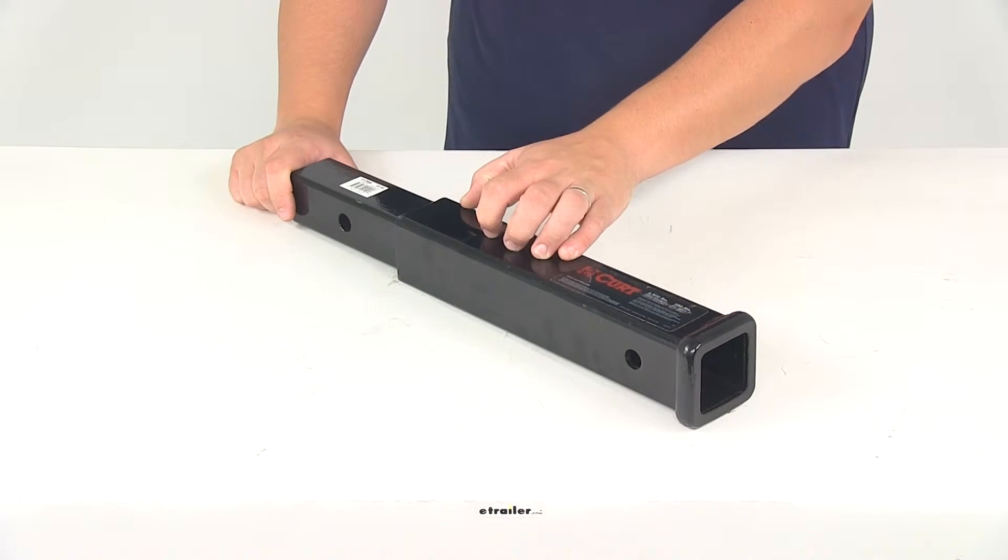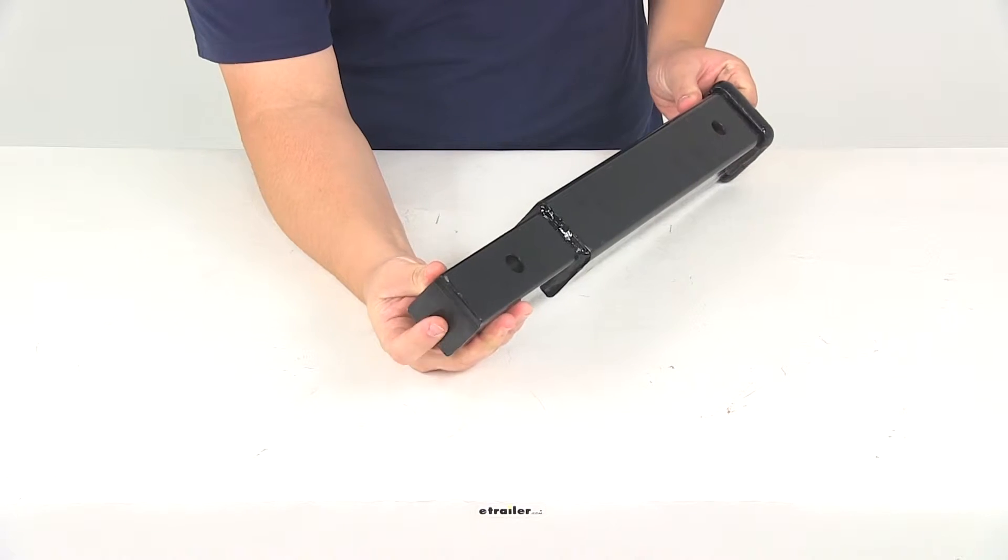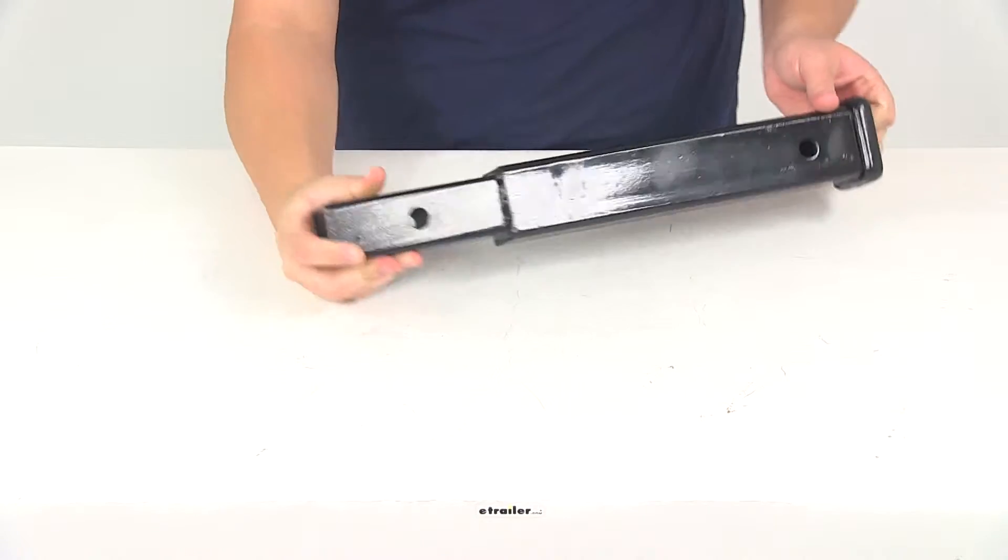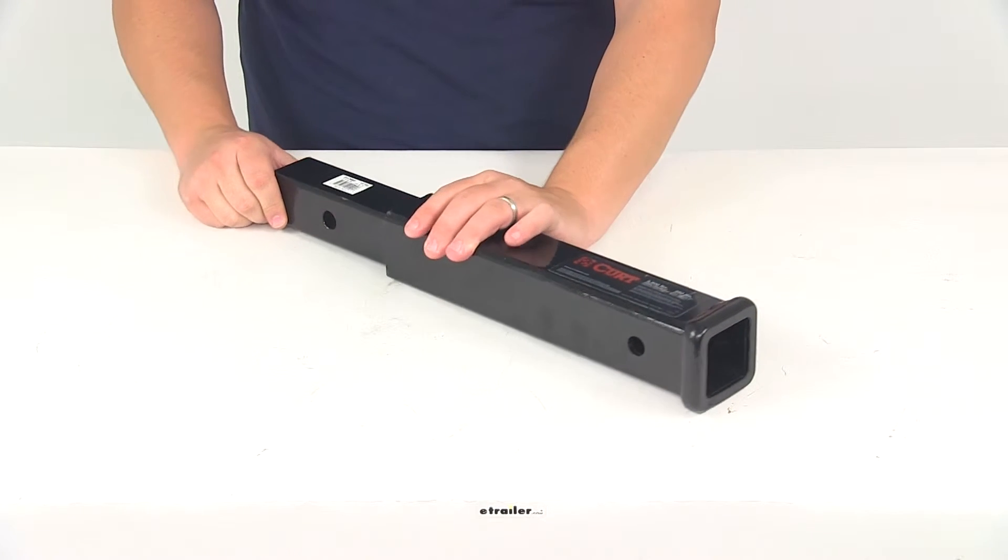Now this unit is constructed of durable steel. It's got the solid shank here on the back side, it's not hollow. It's also going to have a black powder coat finish so it's going to do a really good job at resisting rust and corrosion.